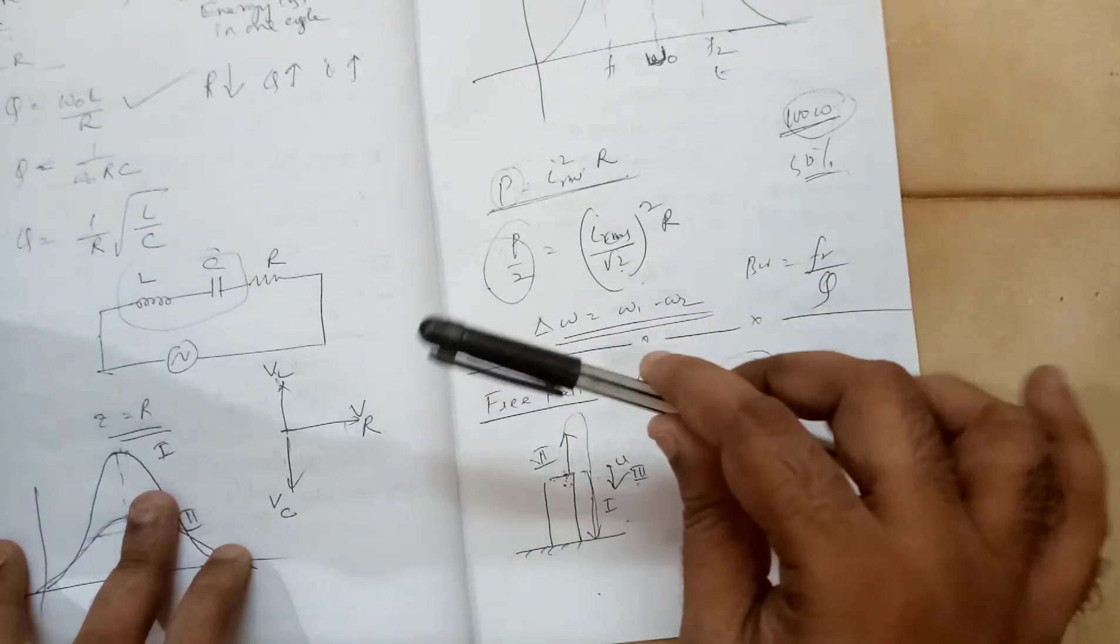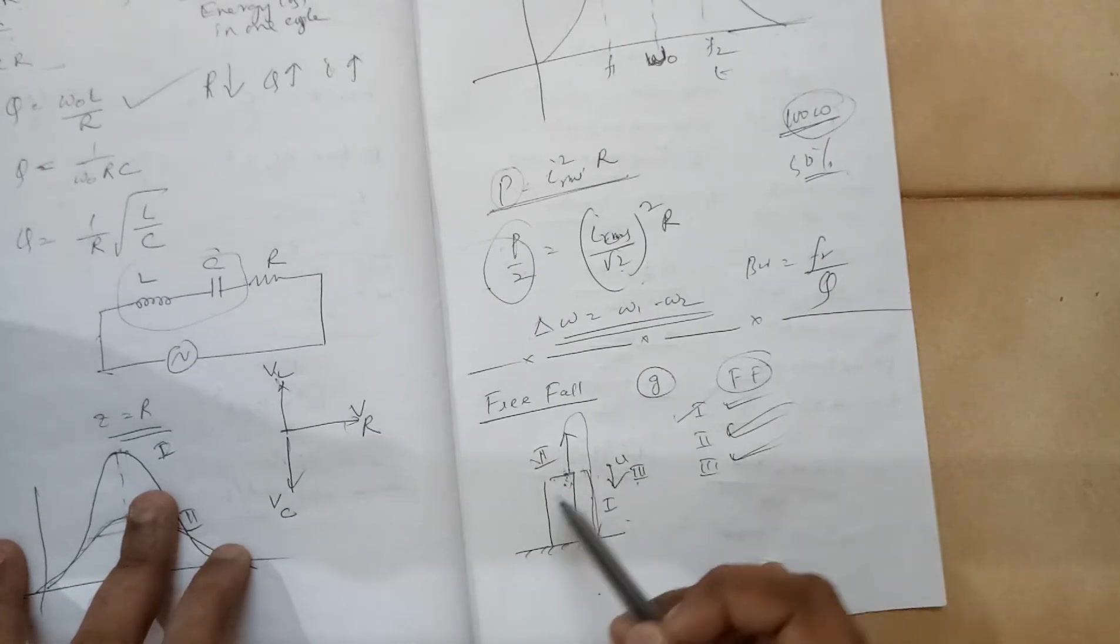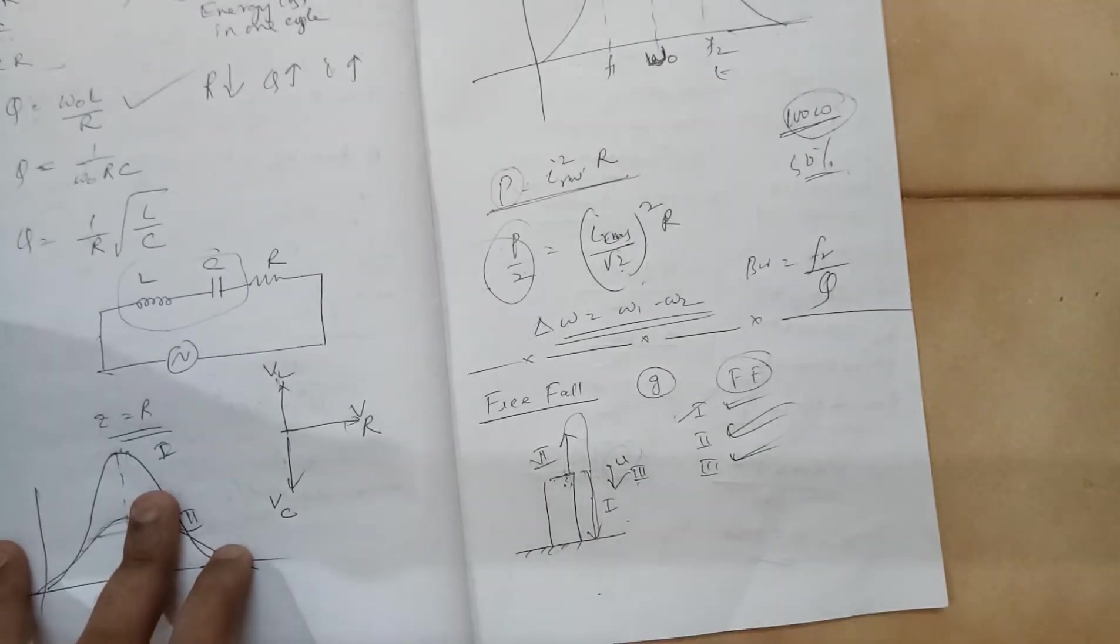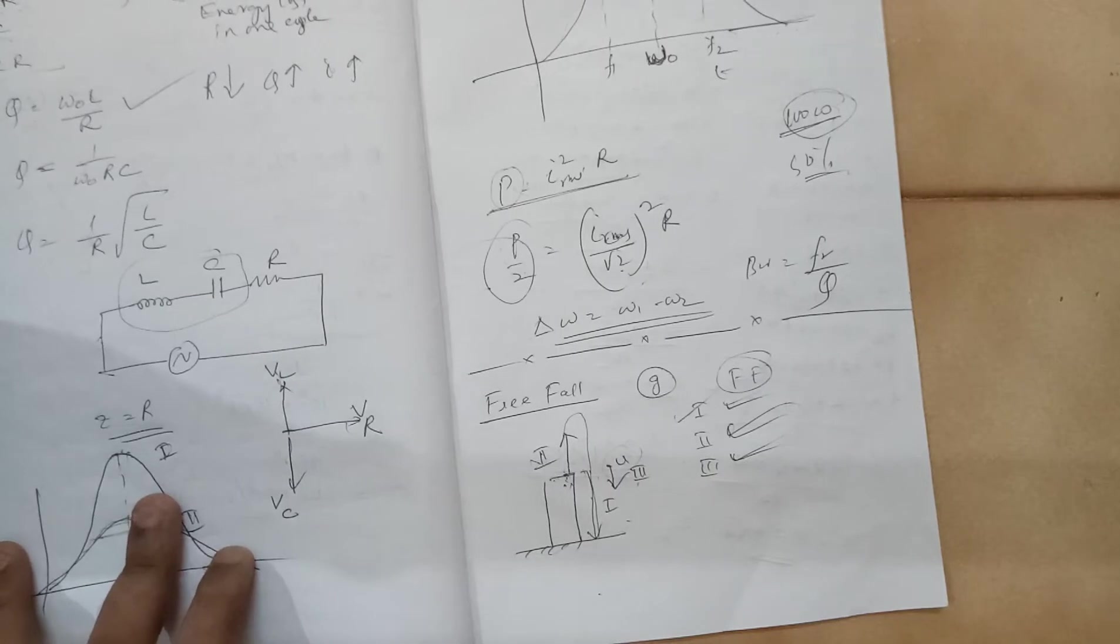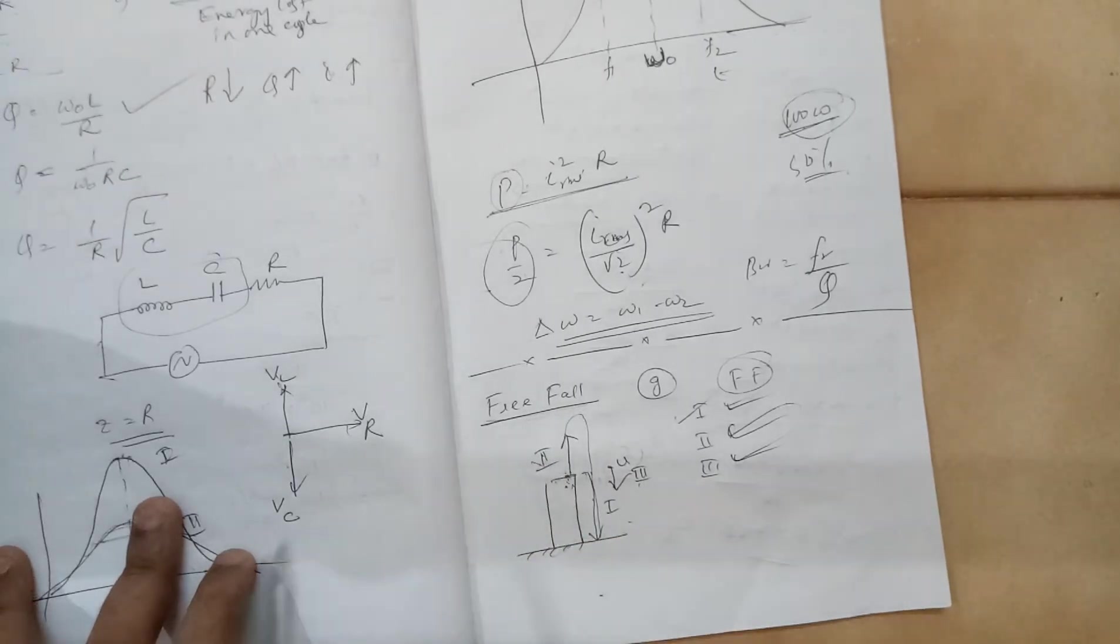So when you are pushing it, when you are throwing it down, you will be throwing the object with some initial speed. Even this case also is the case of free fall only. So the main thing what you have to remember is, when you release an object, if it is moving under the influence of gravity only, then it is called free fall.